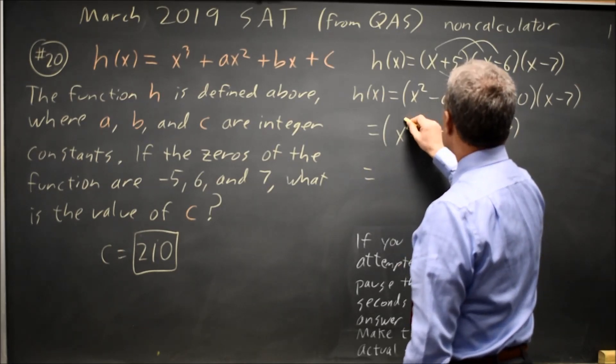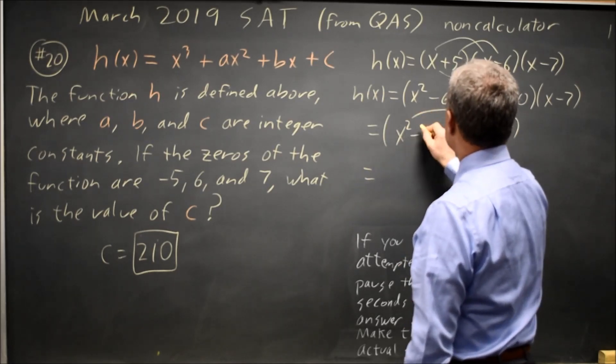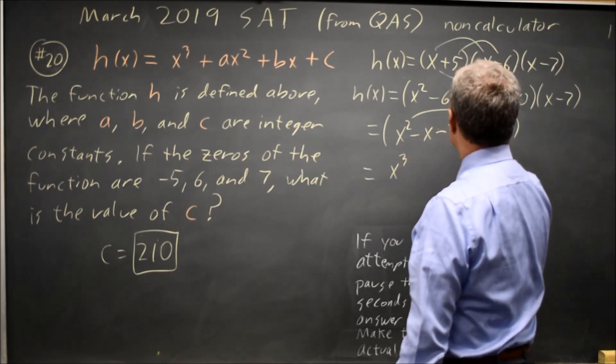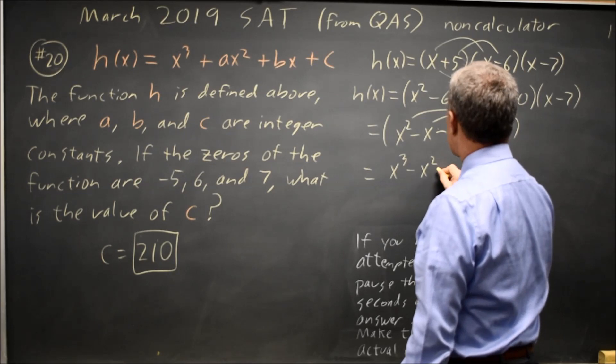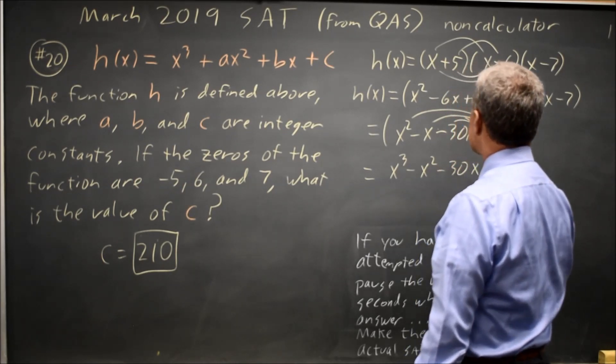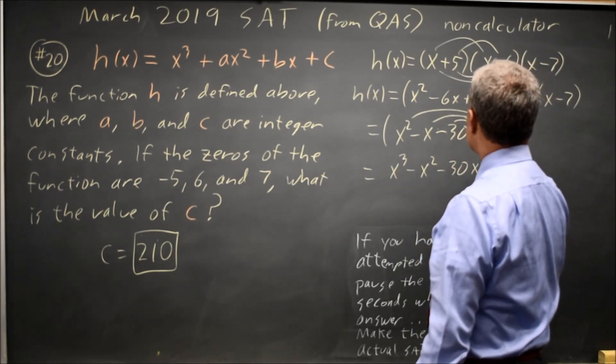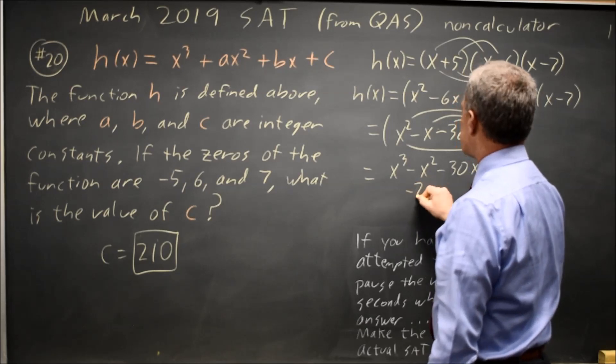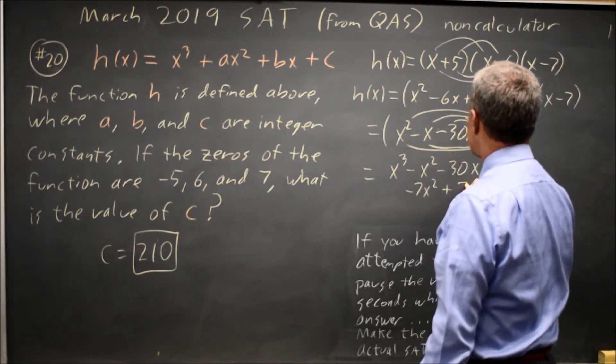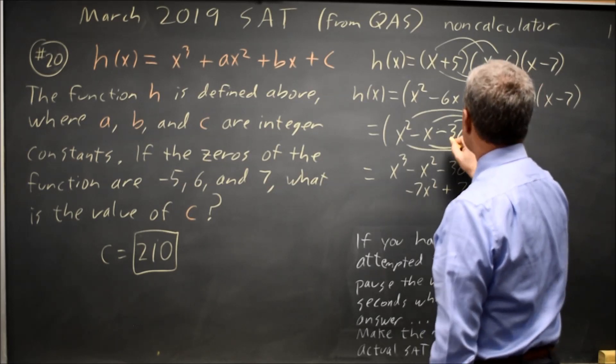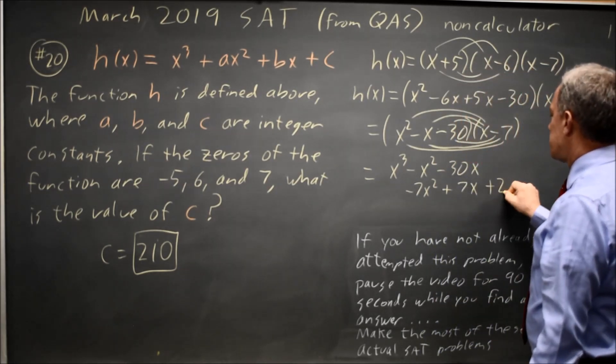X times x squared is x cubed, x times negative x is negative x squared, x times negative 30 is negative 30x. And then negative 7 times x squared is negative 7x squared, negative 7 times negative x is positive 7x, negative 7 times negative 30 is positive 210.